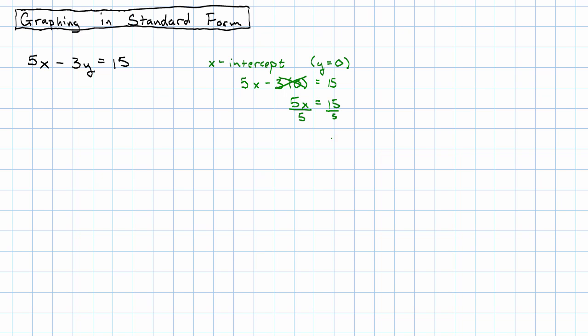Divide both sides by 5 and we get x is 3. Our x intercept then is going to be at (3, 0).